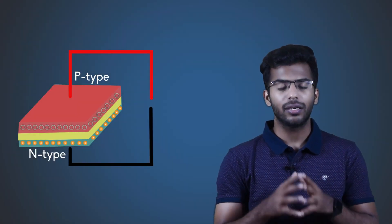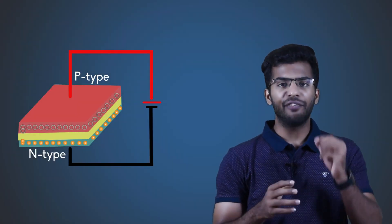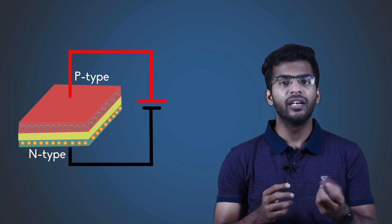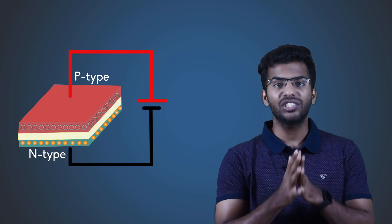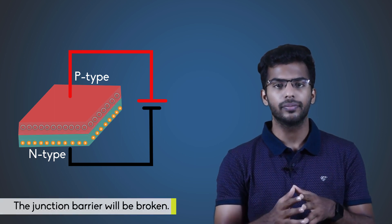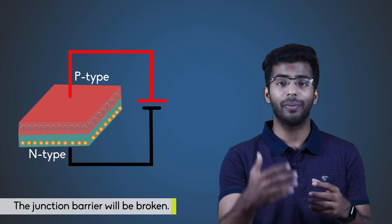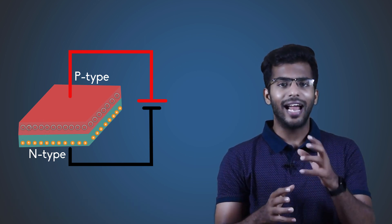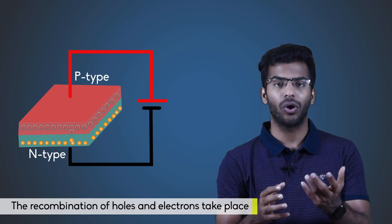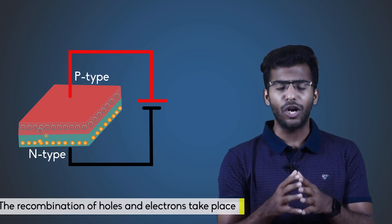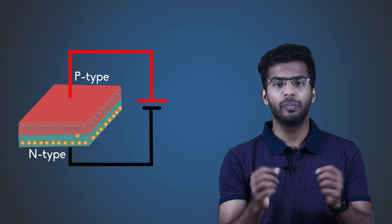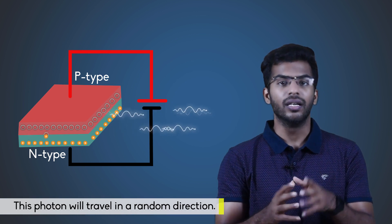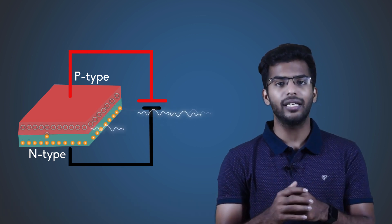Now, let's look at the operation. If we apply a small forward voltage across the terminals, an electric field will be set up and the junction barrier will be broken. Holes from the P-type region and electrons from the N-type region are pushed towards the P-N junction, where recombination of holes and electrons takes place. Due to the recombination, photons will be released and travel in a random direction. This is similar to spontaneous emission.